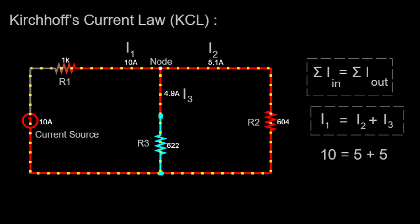In summary, Kirchhoff's Current Law is a fundamental principle in circuit analysis. It states that the total current entering a node in a circuit is equal to the total current exiting the node.